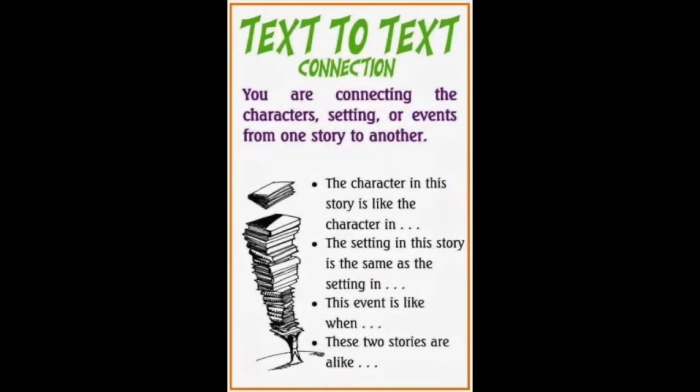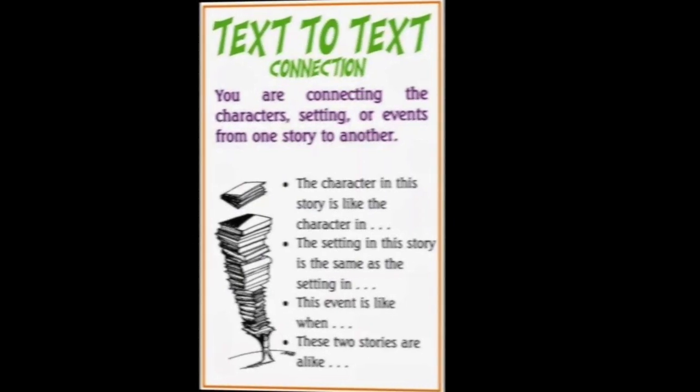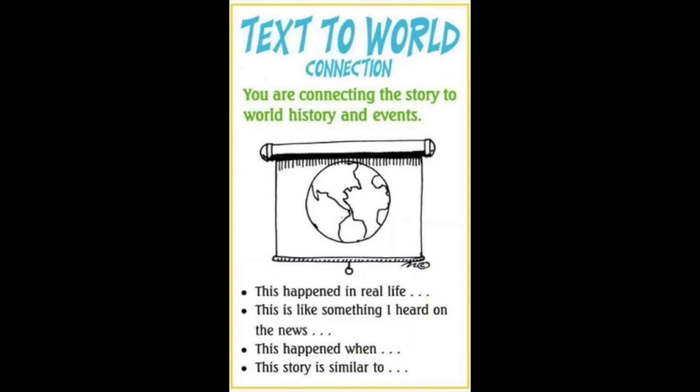With text-to-text connections, you're connecting the book you're currently reading with a book that you've read in the past. For example, if you're reading Goldilocks and the Three Bears, you may make a connection with the Three Little Pigs because they both have three animals in them. Text-to-world connections are really connecting a story that you're reading with anything that's happening in your world, near or far. For example, if something that happens in a book you're reading has happened in the real world, there's a connection.